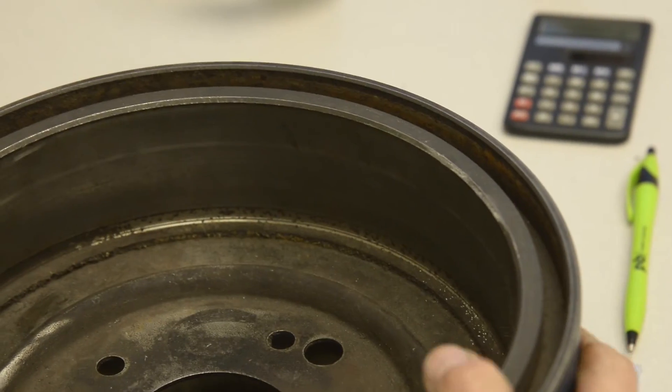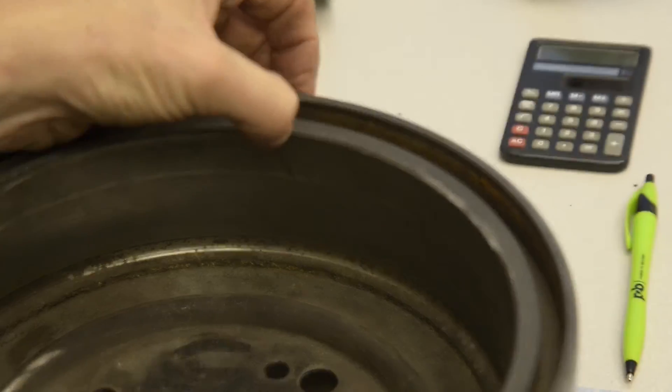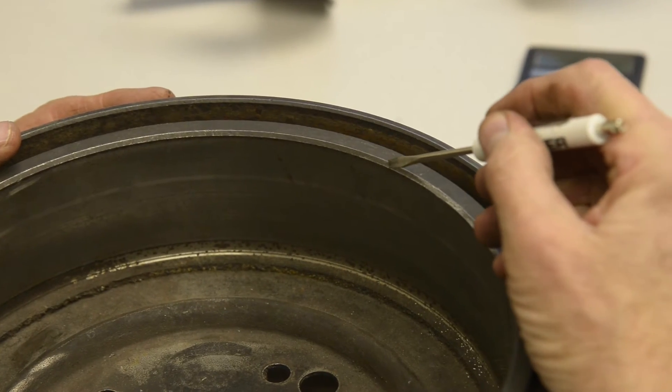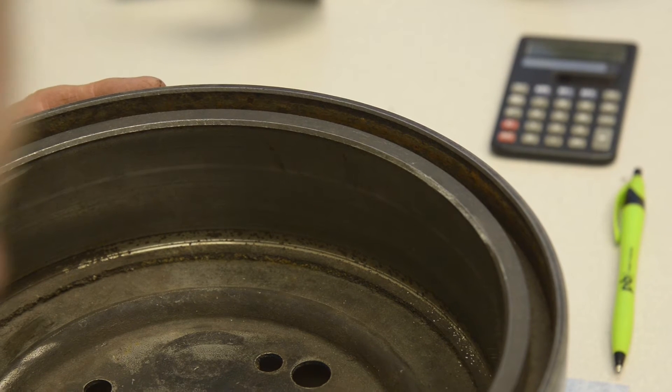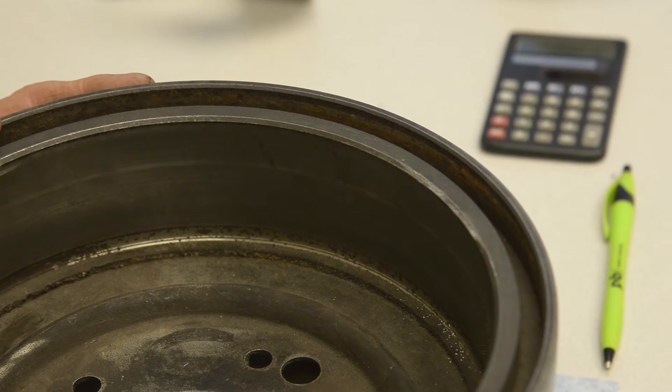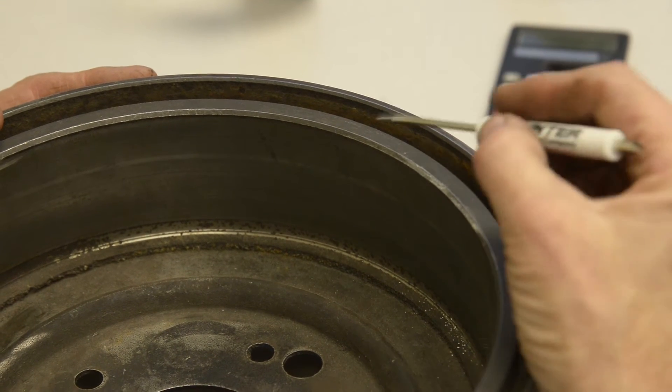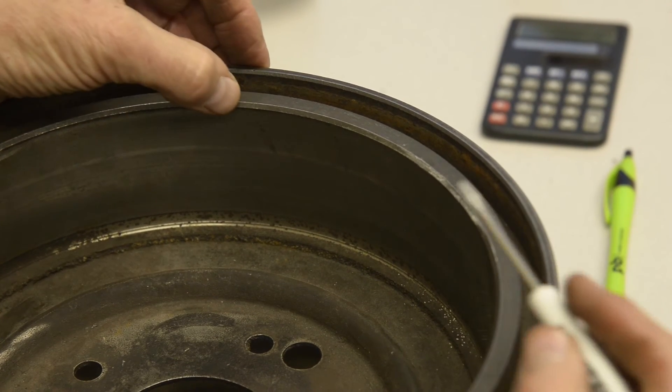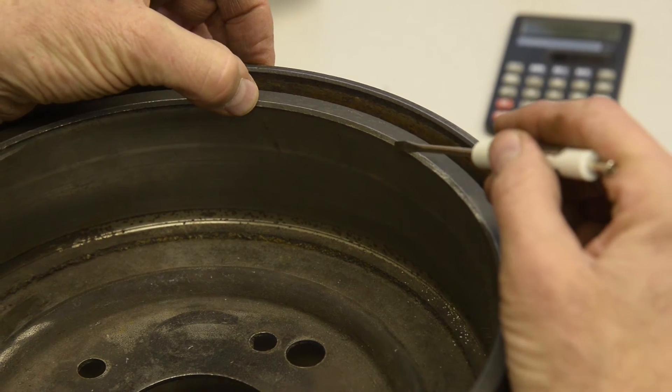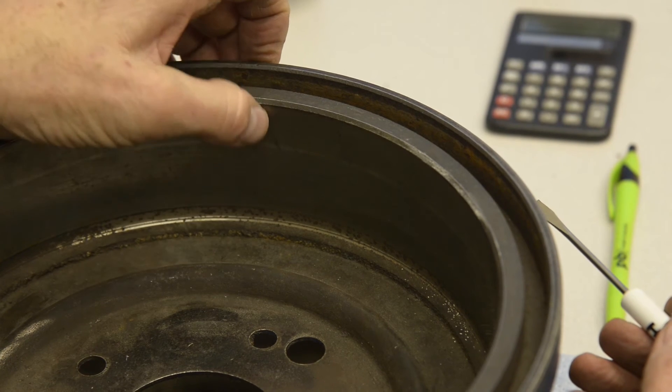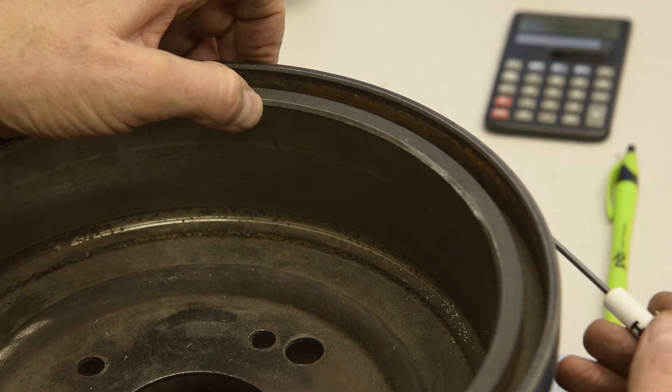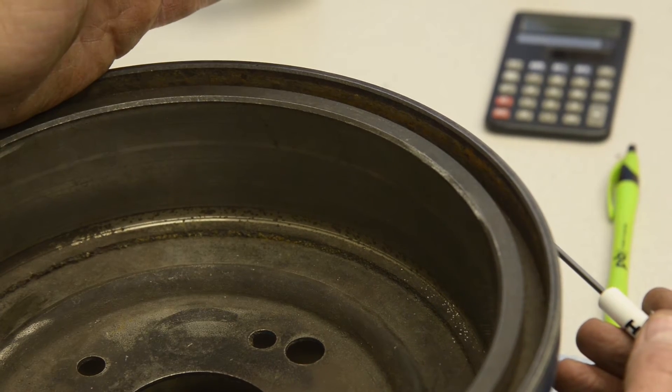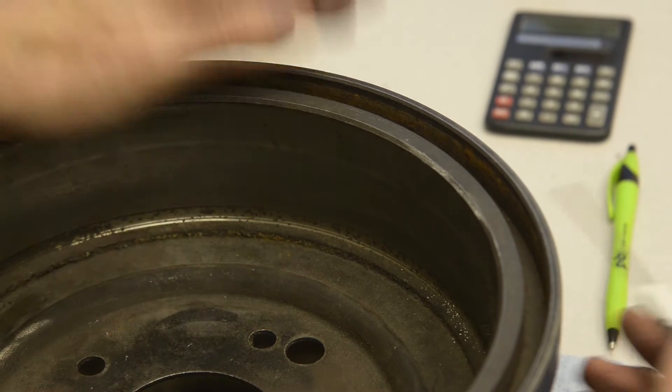This drum right here is actually in really good shape. This has the bevel - it's this little chamfer. We're going to get to that in my conclusion. But this little chamfer or bevel, it's still in place. If the bevel is still in place, the drum is likely just fine to reuse or machine and reuse.